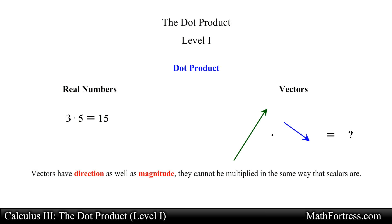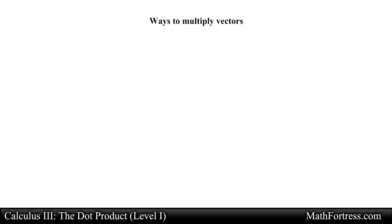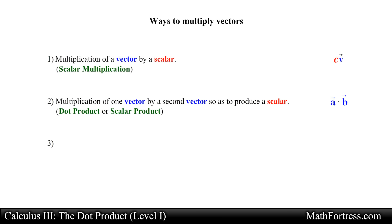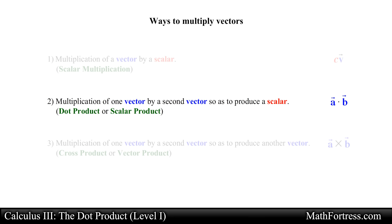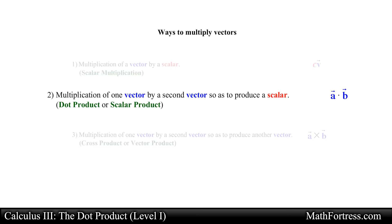Vectors have direction as well as magnitude, so they cannot be multiplied in the same way that scalars are. Instead we must define what the operation of vector multiplication means. Among the many possible ways, there are three most commonly used in math and physics: multiplication of a vector by a scalar, which was already discussed in previous videos; multiplication of one vector by another to produce a scalar; and multiplication of one vector by another to produce a vector. In the following series of videos we will focus on the second type — the dot product — where a dot is used to indicate multiplication. I will be using the terms dot product and scalar product interchangeably.